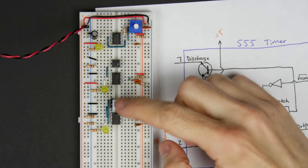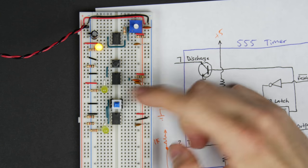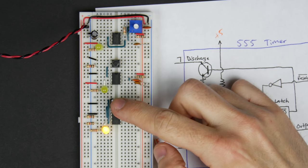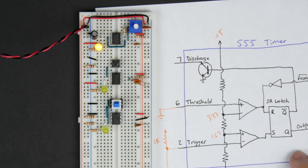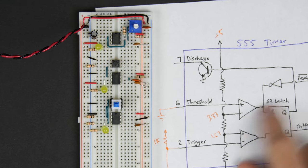So now what we've got is you push the button, the light comes on. Push the button again, light turns off. So not very exciting, but it is fully debounced. And we're using the SR latch part of the 555 timer.